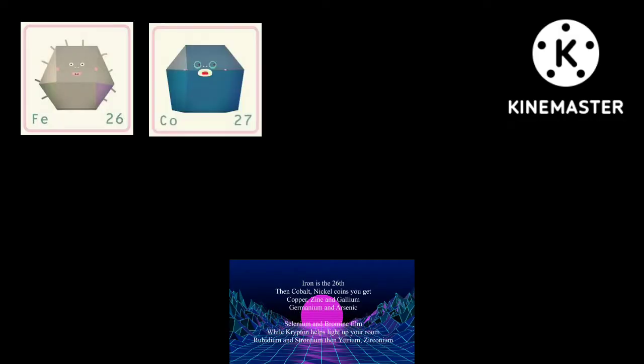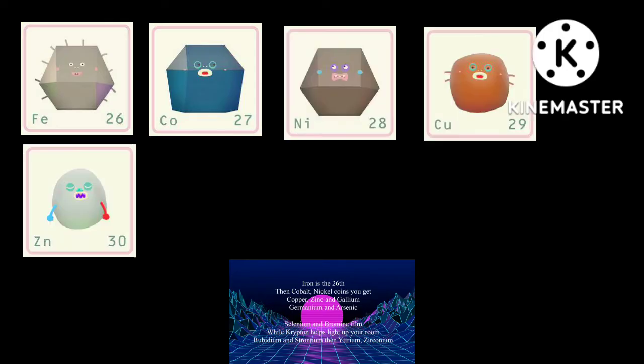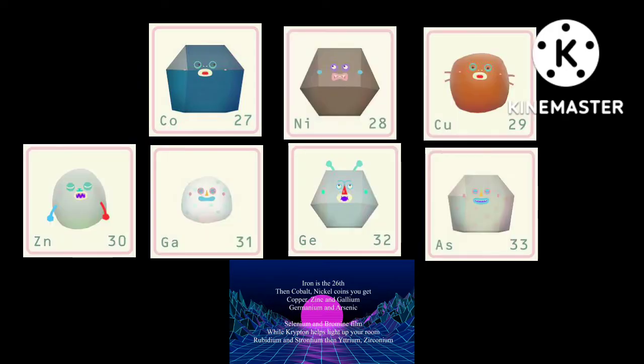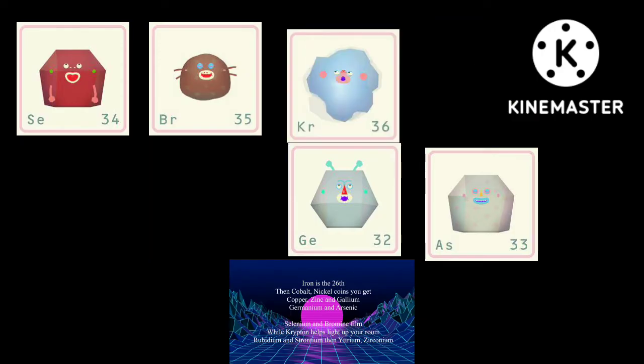Iron is the 26th, then cobalt, nickel coins you get, copper, zinc, and gallium, germanium and arsenic, selenium and bromine film, while krypton helps light up your room.